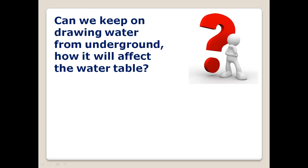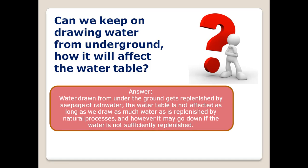Can we keep drawing water from underground without affecting the water table? The water drawn from underground gets replenished by the seepage of rainwater. The water table is not affected as long as we draw as much water as is replenished by natural processes; however, it may go down if the water is not sufficiently replenished.